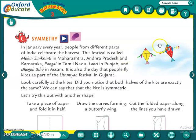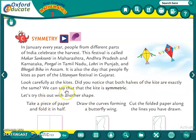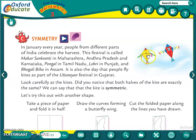Here, there are two pictures of kites. Look carefully at the kites. Did you notice that both halves of the kites are exactly the same? We can say that the kite is symmetric. We can see the whole kite - in the middle of the kite, a line is there and both parts are the same. So we can say that kite is symmetric.